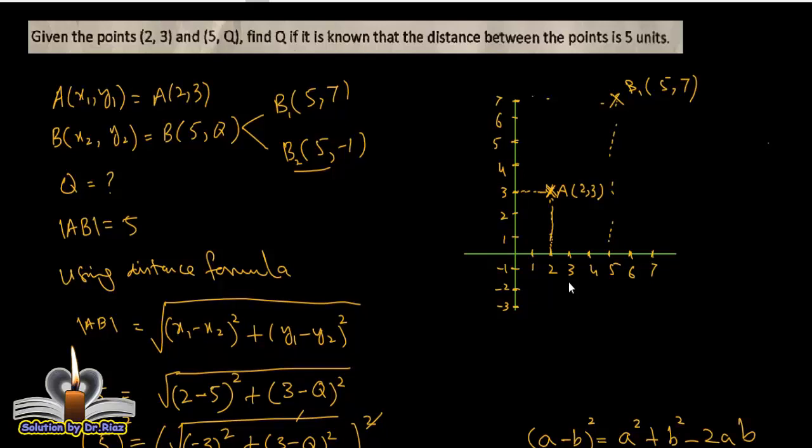And another (5, minus 1). We write below the horizontal line. So x coordinate 5, y coordinate is minus 1. So B₂ is (5, minus 1).